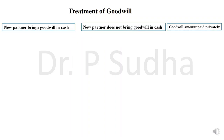These journal entries will depend upon three different situations. First, when the new partner brings goodwill in cash. Second, when the new partner does not bring goodwill in cash and the goodwill amount is paid privately — meaning personally. The new partner pays the goodwill amount directly to the old partners, not into the business. If the amount is not brought into the business and is paid privately, no entry is needed in the books of the partnership firm.